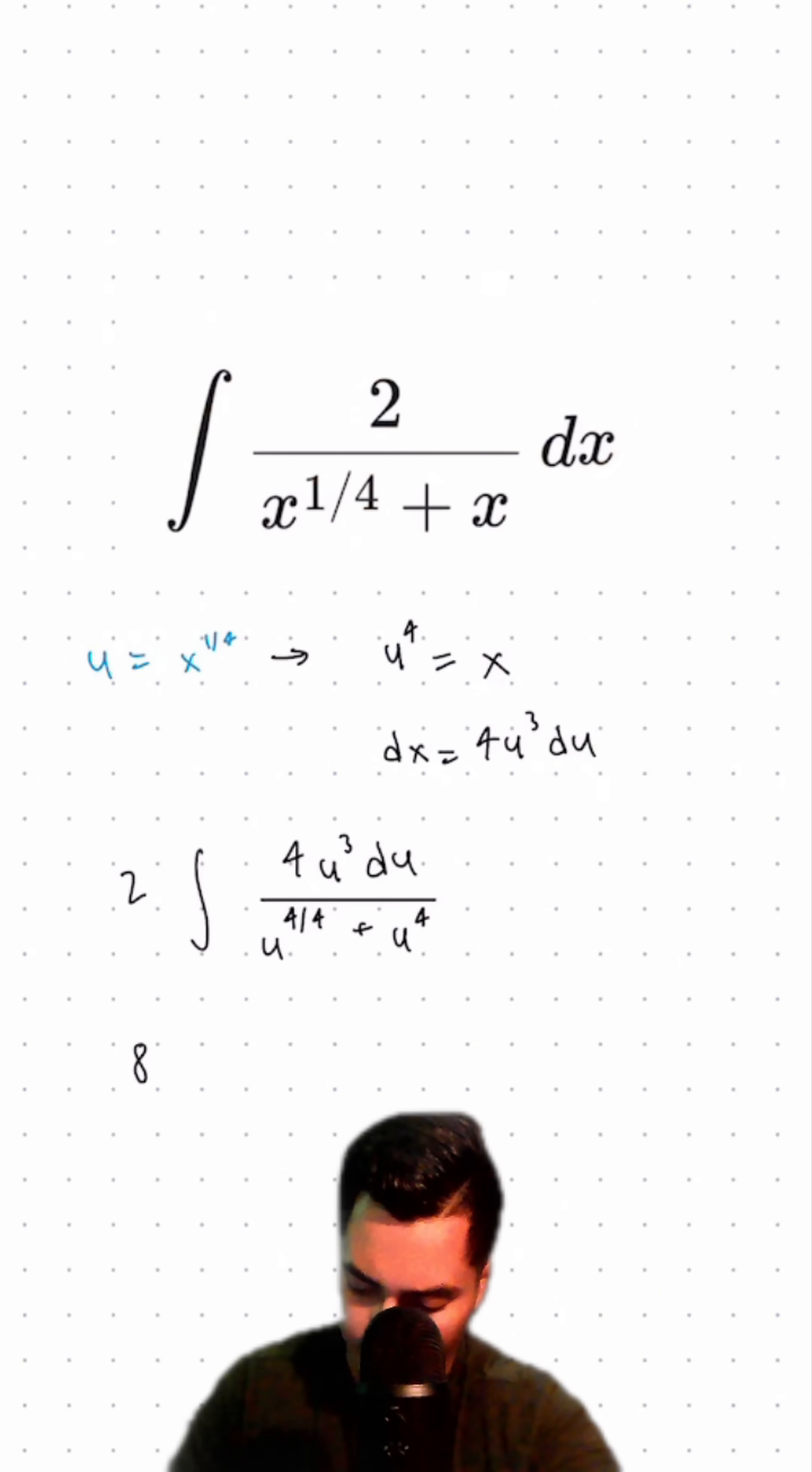Pulling those constants out of the integral, we'll have 8 times the integral of u cubed du over u plus u to the 4th power.